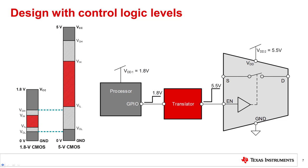In this case, a discrete or integrated translator is needed to translate the 1.8 volt control signal from the driver to the respective VIH and VIL levels of the switch.